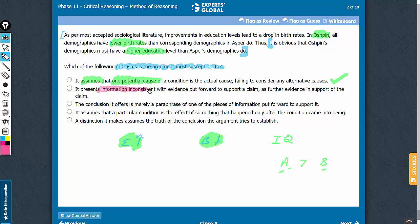No, the argument does not present any information that is inconsistent with evidence put forward. No, the conclusion it offers is not merely a paraphrase of one of the pieces of information. There is a bit of reasoning involved here. However flawed, the reasoning is involved there. It's not the case of a mere paraphrasing of a premise.